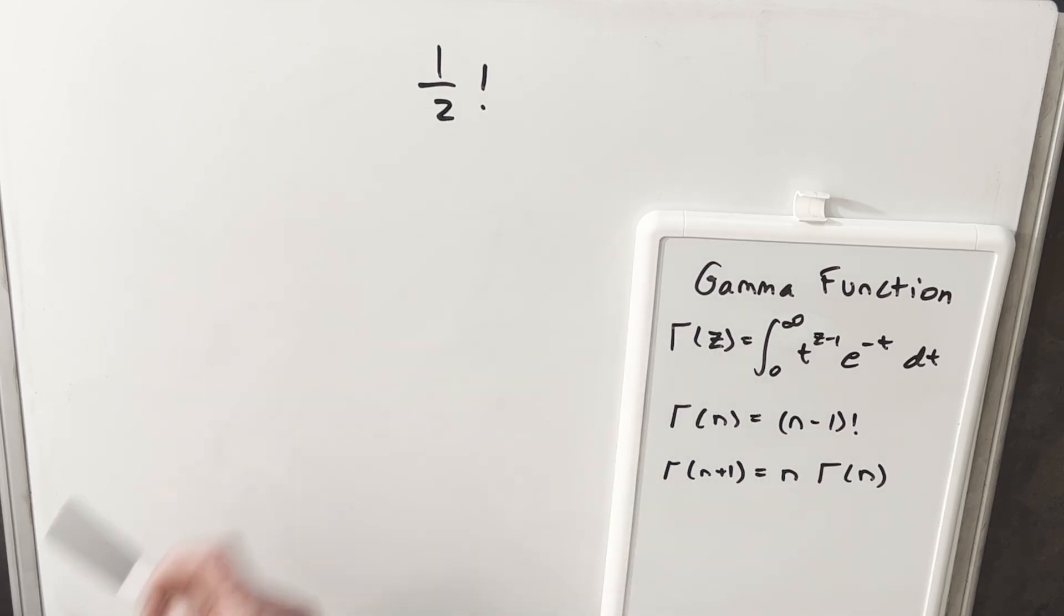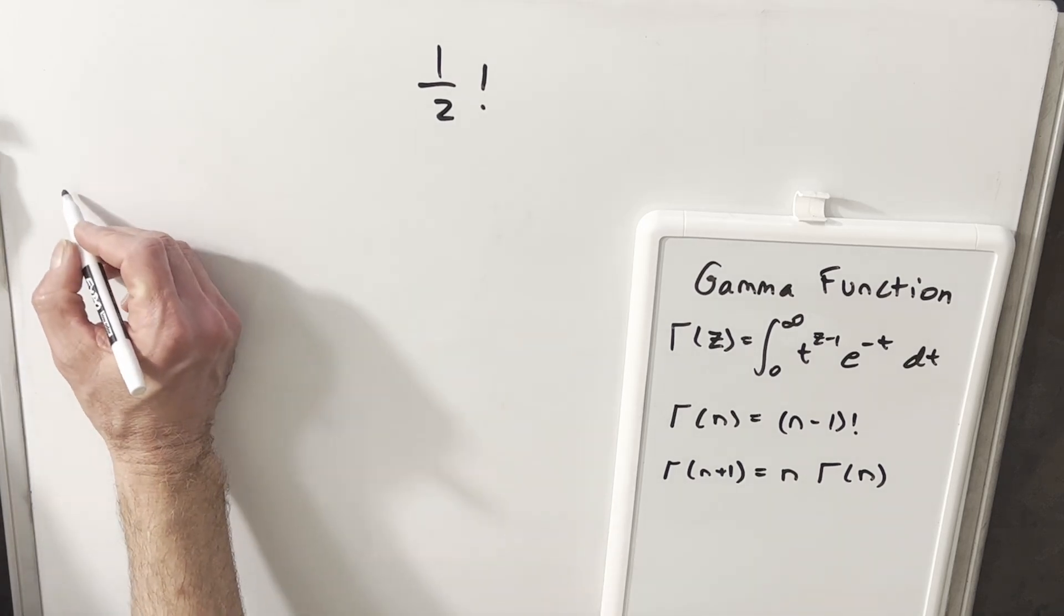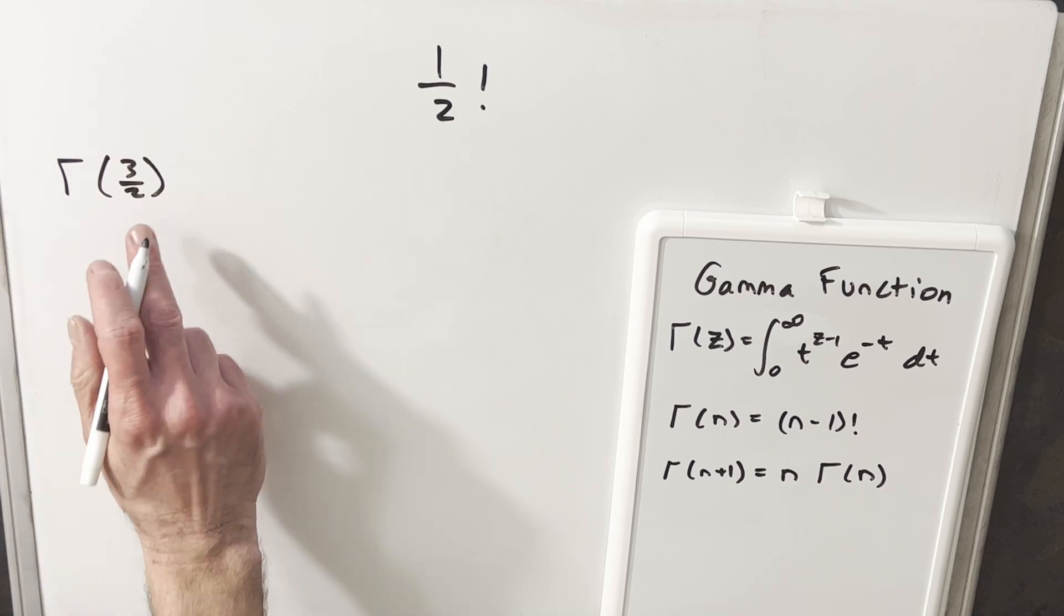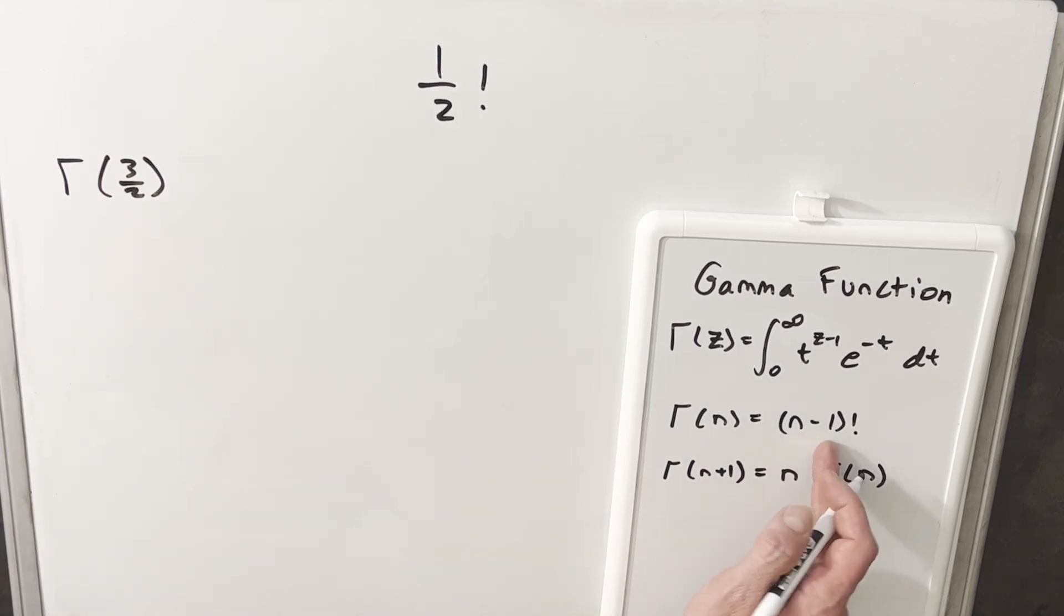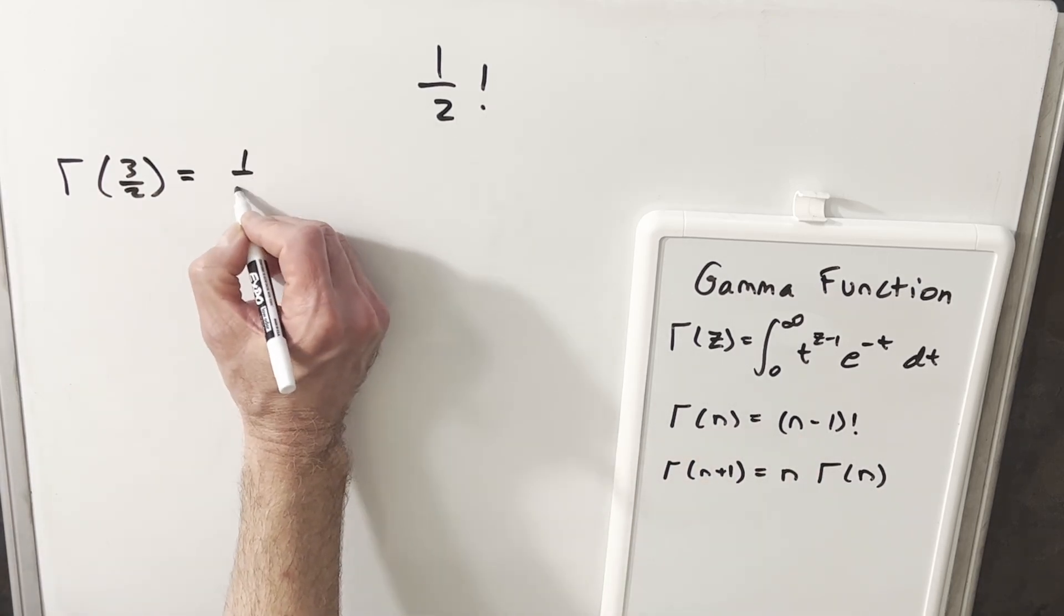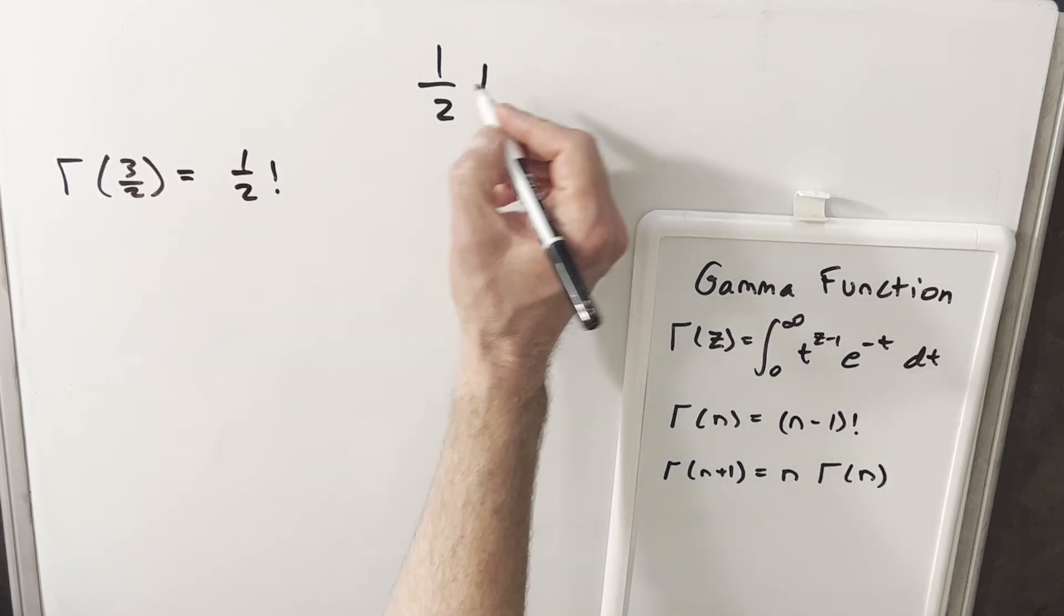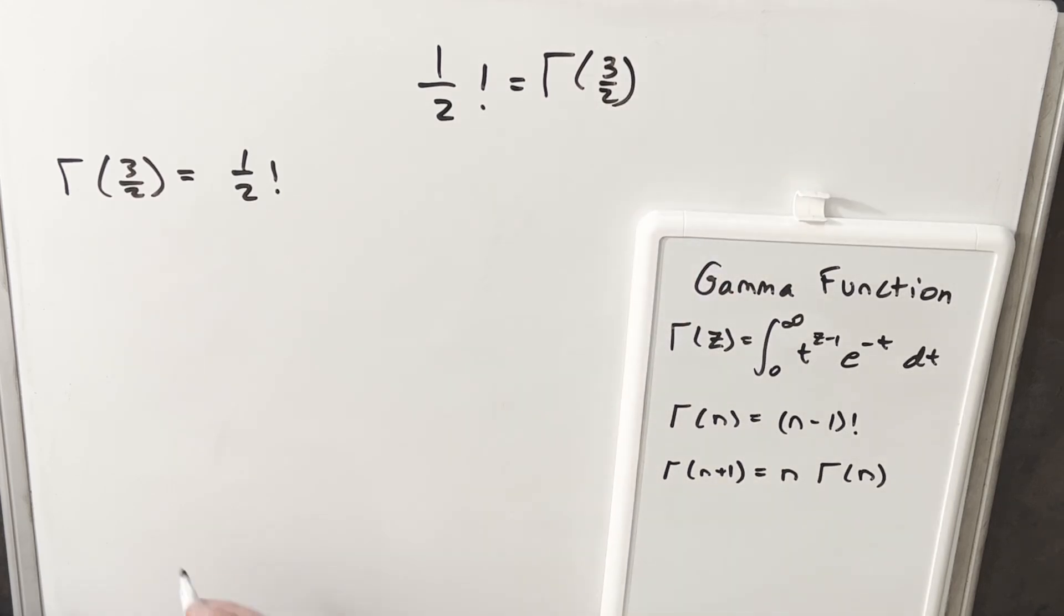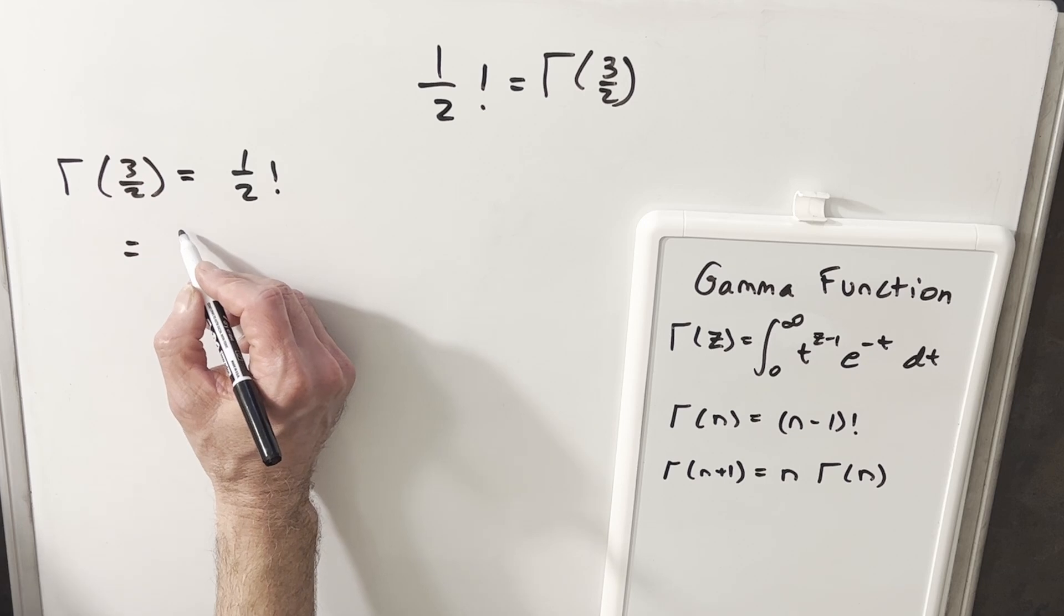Let's actually look at our example now of half factorial using this second formula, and we'll just notice if you look at the gamma function of three halves, well three halves minus one factorial is going to give us one half factorial. So what we're looking for here is actually the same thing as gamma of three halves. And so what we can do is just write this in terms of an integral and see if we can solve that integral.